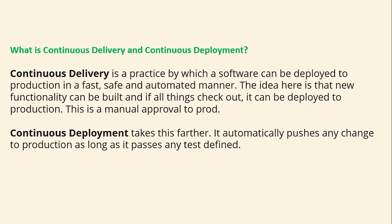Before knowing what Spinnaker is, let's understand continuous delivery and continuous deployment. Continuous delivery is a practice by which software can be deployed to production in a fast, safe, and automated manner. The idea is that new functionality can be built and if everything checks out and is working fine, it can be deployed to production. This is a manual approval to prod.